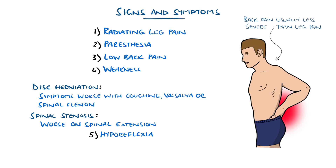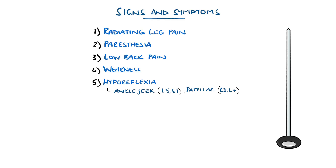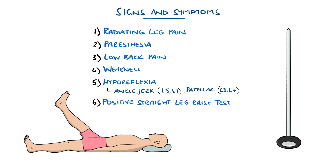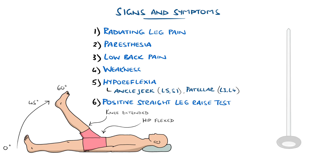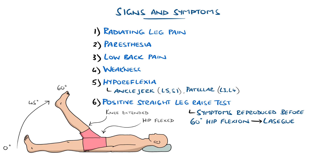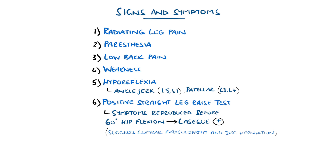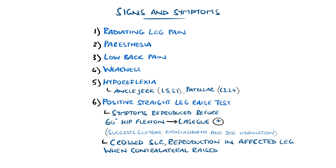Reflexes, particularly the ankle jerk if L5-S1 is affected, and patella at L3-L4, may be reduced. The straight leg raise involves lying supine and passively raising the affected leg by flexing the hip with the knee extended. If symptoms are reproduced before 60 degrees of hip flexion, including radiating leg pain, this is considered a positive straight leg test or Lasègue sign, suggesting lumbosacral radiculopathy as a result of disc herniation, particularly at L5-S1. There may also be reproduction when the contralateral leg is raised, felt down the affected leg, called a crossed straight leg test, suggesting disc herniation with nerve root irritation.